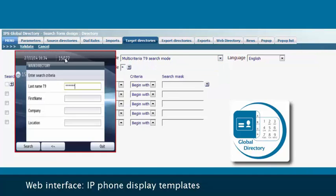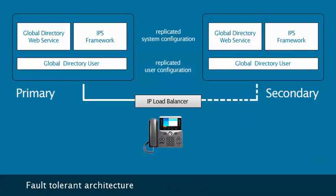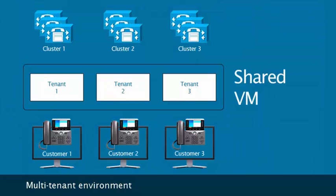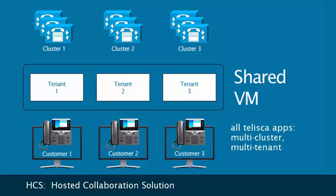IPS Global Directory may be installed on two servers in a fault-tolerant architecture. Like all of the Taliska framework, it may function in a multi-tenant environment such as HCS, the Hosted Collaboration Solution. Global Directory data is kept separate and secure for each separate tenant.